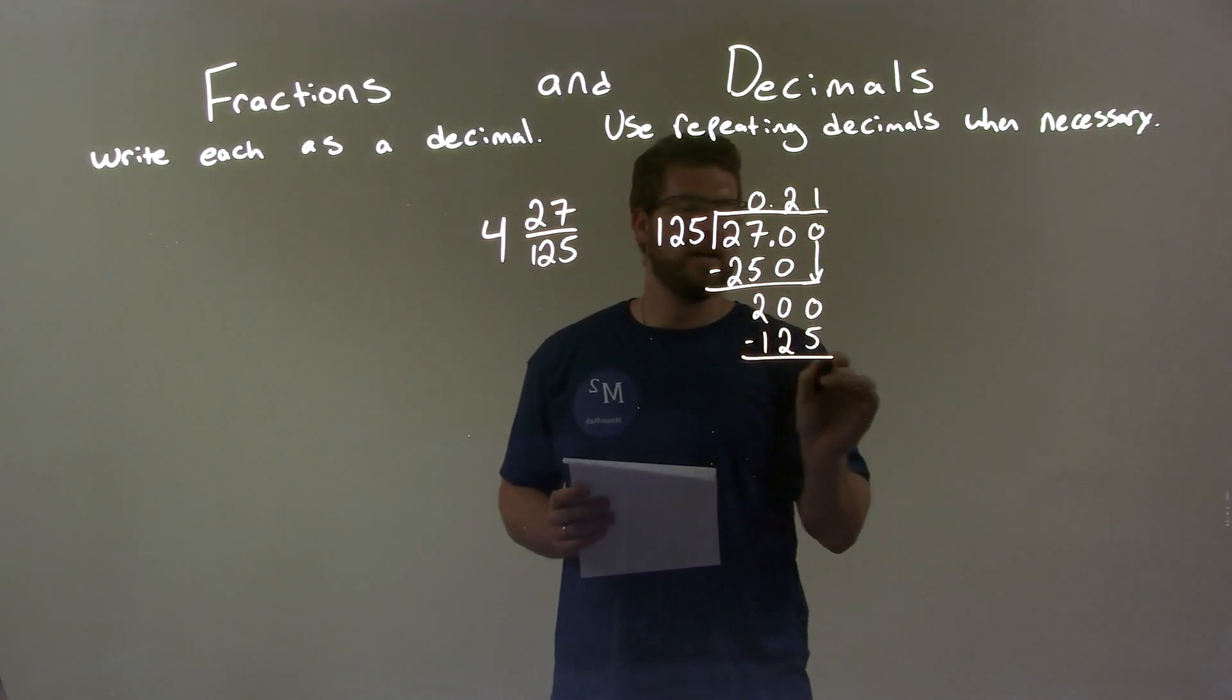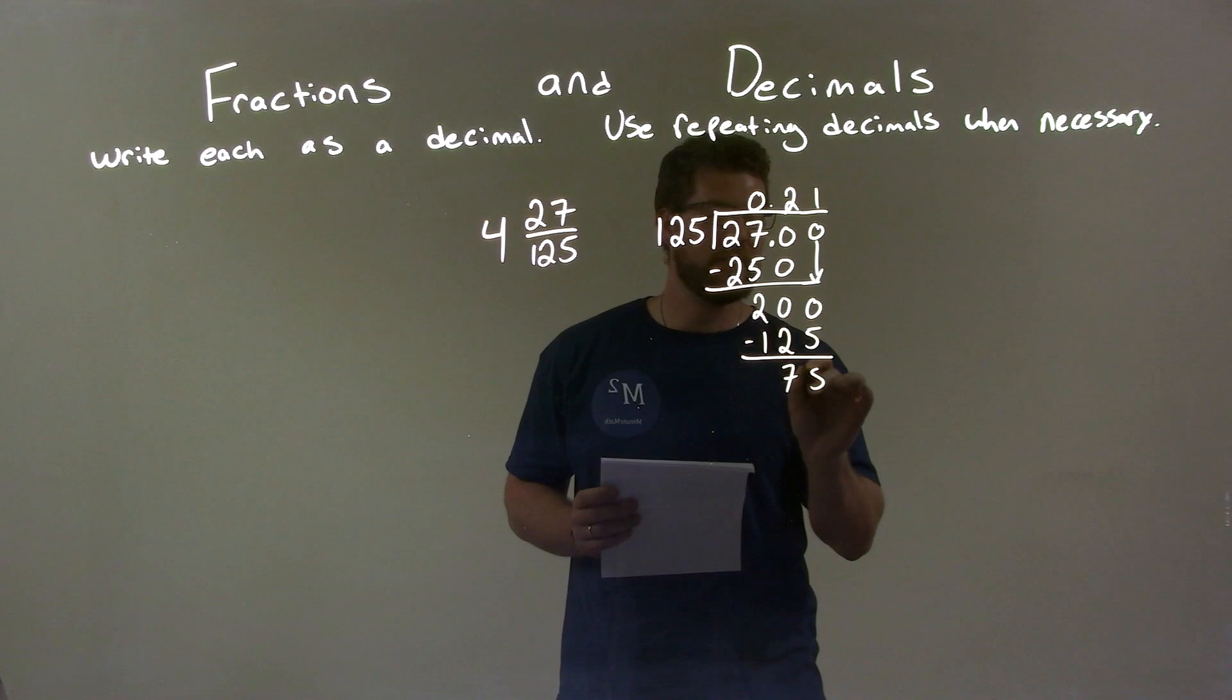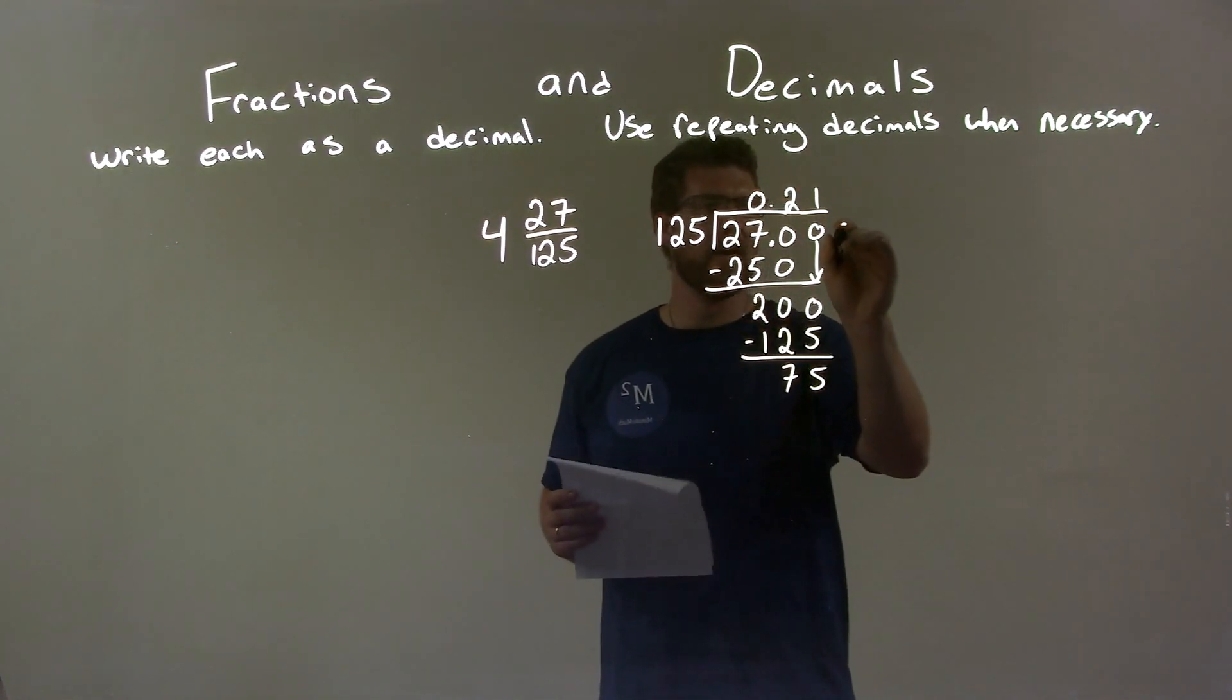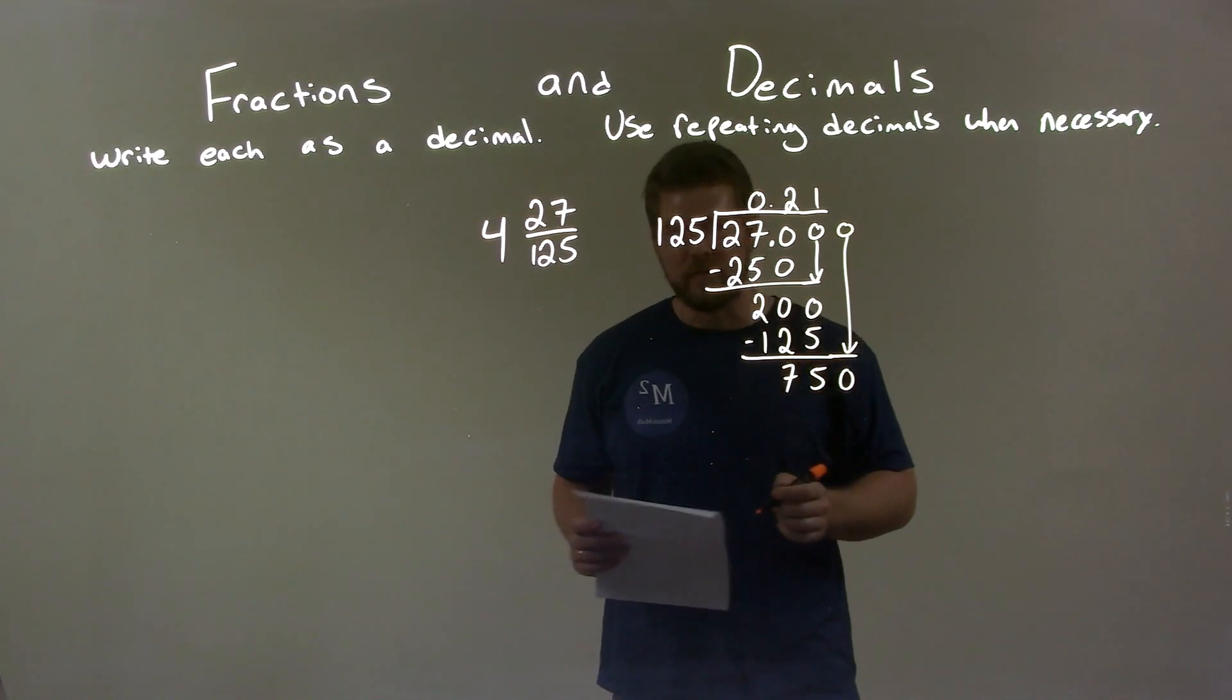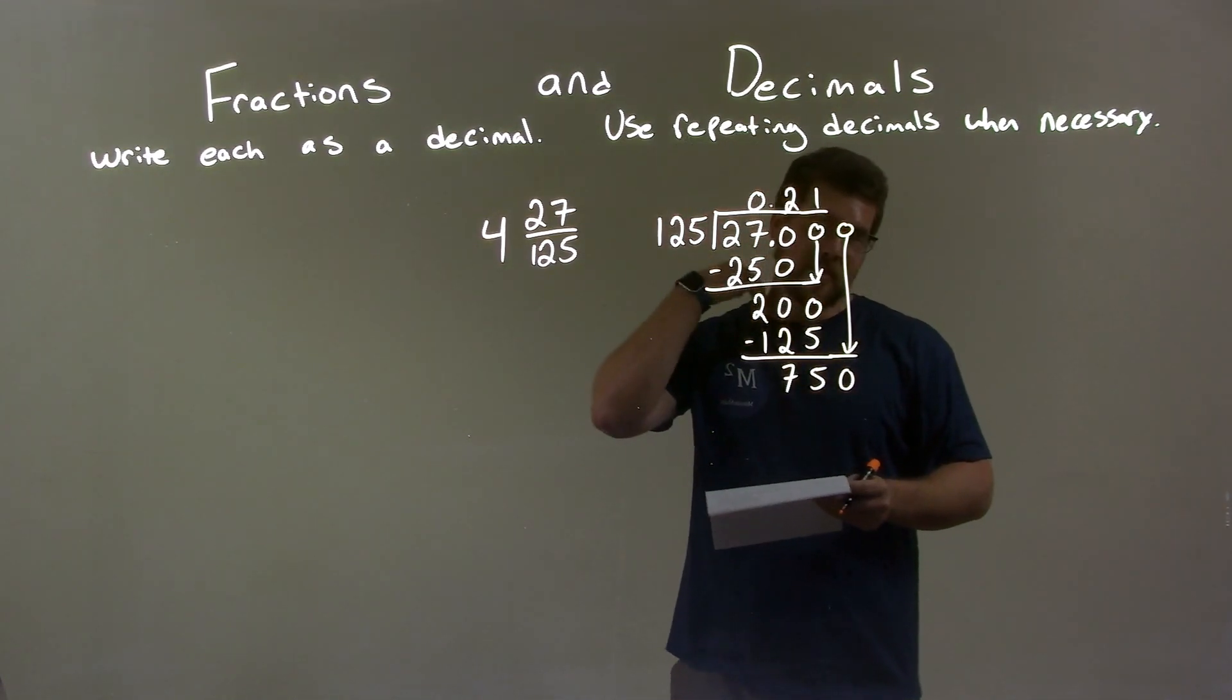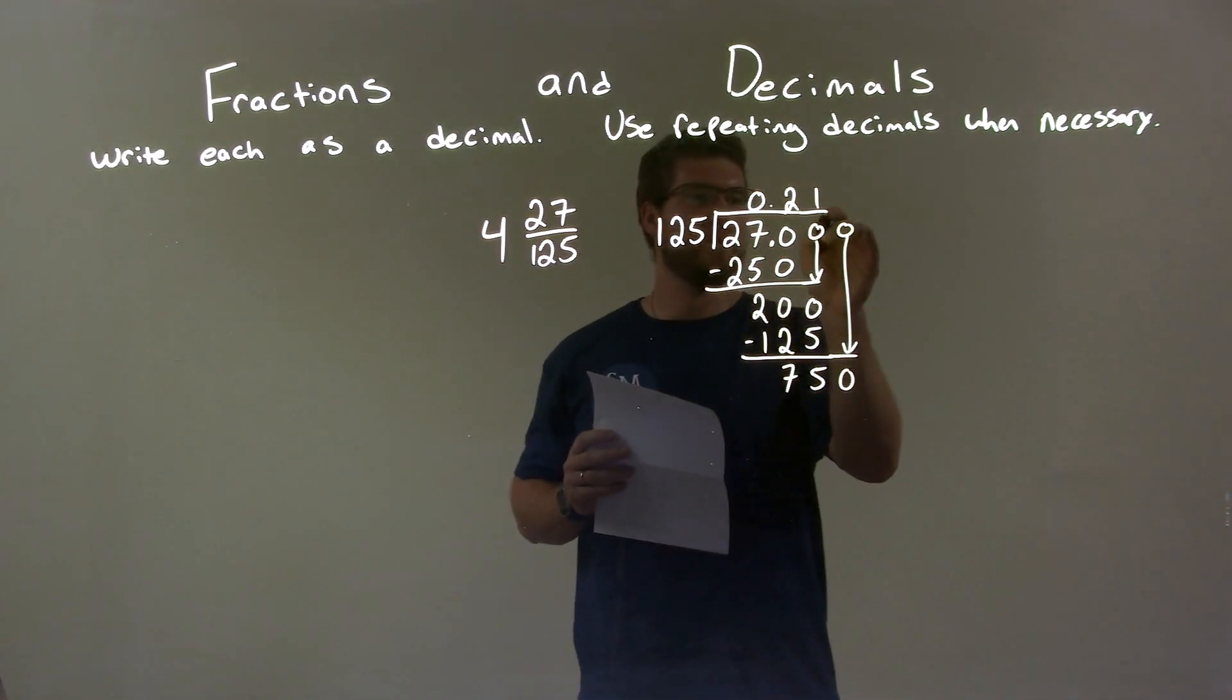And then, we subtract that, and we get 75. We add another zero, and we have 750.